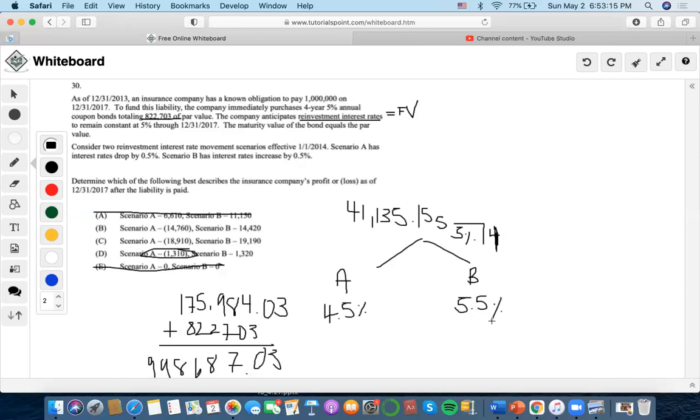But let's go over scenario B so we can go over more of this concept. So I have my calculator here, the reinvestment, 41,135.15 as the payment, 5.5 as the interest rate, 4 as the number of years, 0 as the present value, compute future value. So it's 178,619.78.